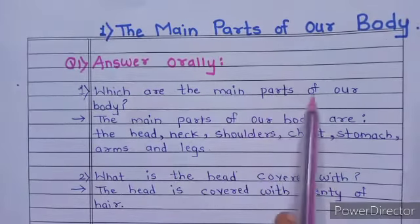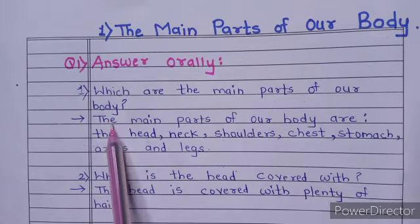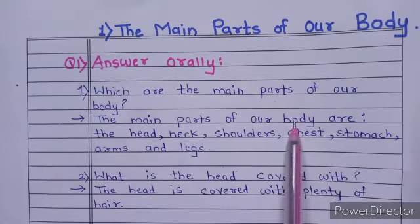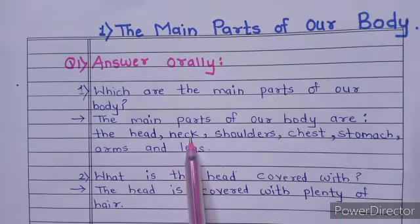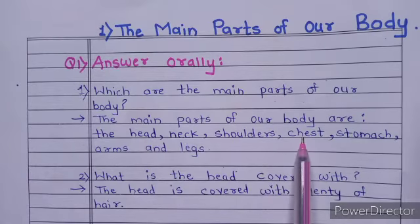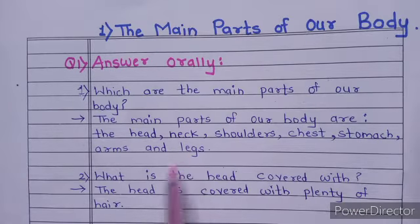Which are the main parts of our body? The main parts of our body are the head, neck, shoulders, chest, stomach, arms and legs.